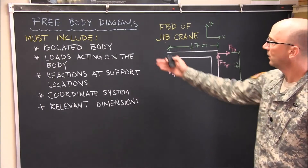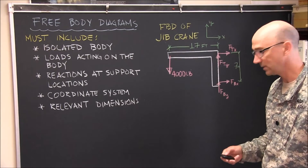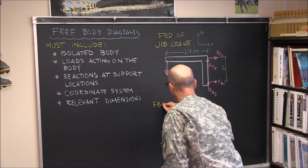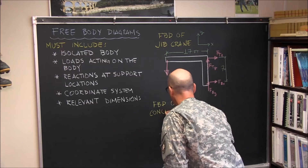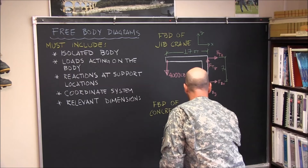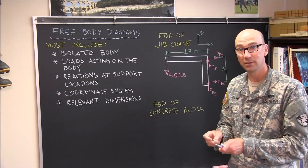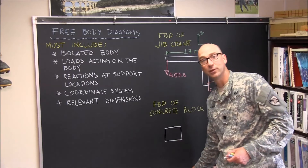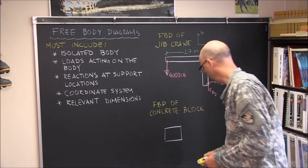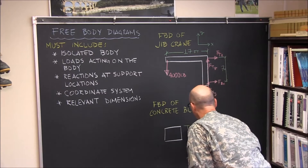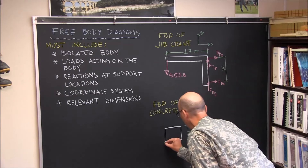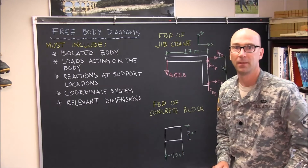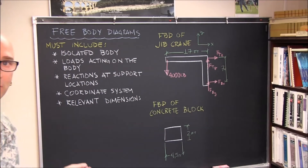I went ahead and left up the jib crane here with the list of what must be included in our free body diagram so that we can see how all of this connects together. The isolated body in this case is just the concrete block. If we pull out the tape measure and go measure how big this concrete block is, we can label it with the appropriate dimensions — we find that this is a two-foot-tall block and it is four and a half feet wide.